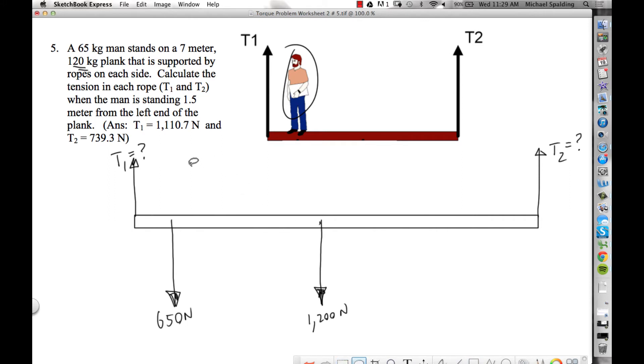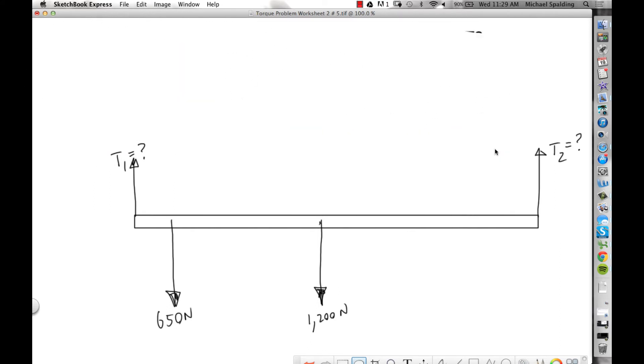So if you have two unknowns, you need to have two equations. How do we get two equations? Well, we're gonna sum the forces—that'll give us one equation—and then we're gonna sum the torques, that'll give us a second equation.